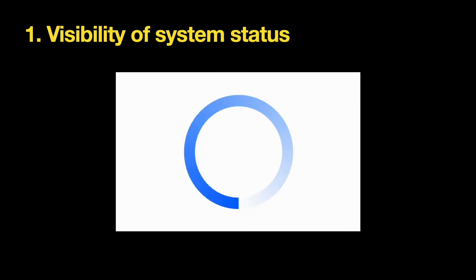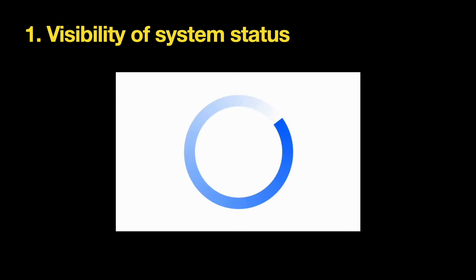The first heuristic is visibility of system status. The system should always keep the user informed about what's happening. When you design a product, you shouldn't make the user wonder — offer feedback, whether visual, audio, or haptic, to help the user understand the current status. It's particularly important to provide feedback on actions initiated by the user, as it acts as acknowledgment. Loading is one case where you need to inform users about current status, since without feedback users have no information about whether the system is doing something or not.